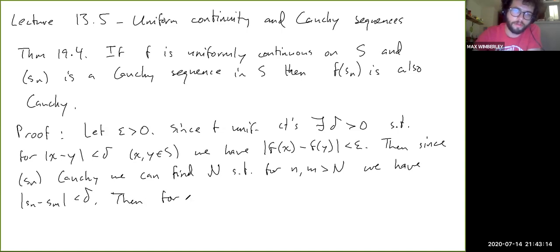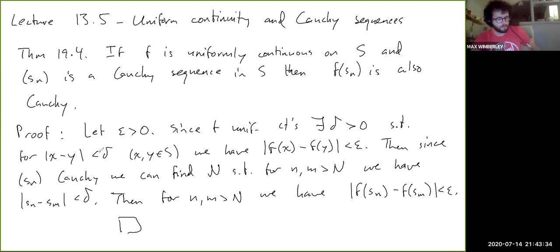Okay, so then, for N and M greater than N, we have F of SN minus F of SM less than epsilon. Okay, and that's the whole theorem. So pretty, you know, short and sweet. I think, well, okay, so just to cap this off,